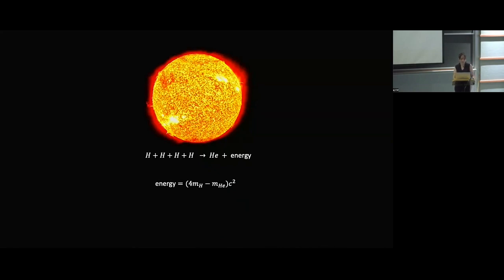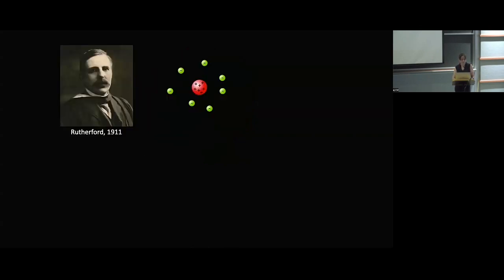And so today, we know that the sun and most of the stars are powered by nuclear fusion. That's the conversion of four hydrogen nuclei or four protons into one helium nucleus. Now this releases energy, because the mass of the helium nucleus is slightly smaller than the mass of four hydrogen nuclei. And so the mass that disappears in the process just gets converted into energy through E=mc².